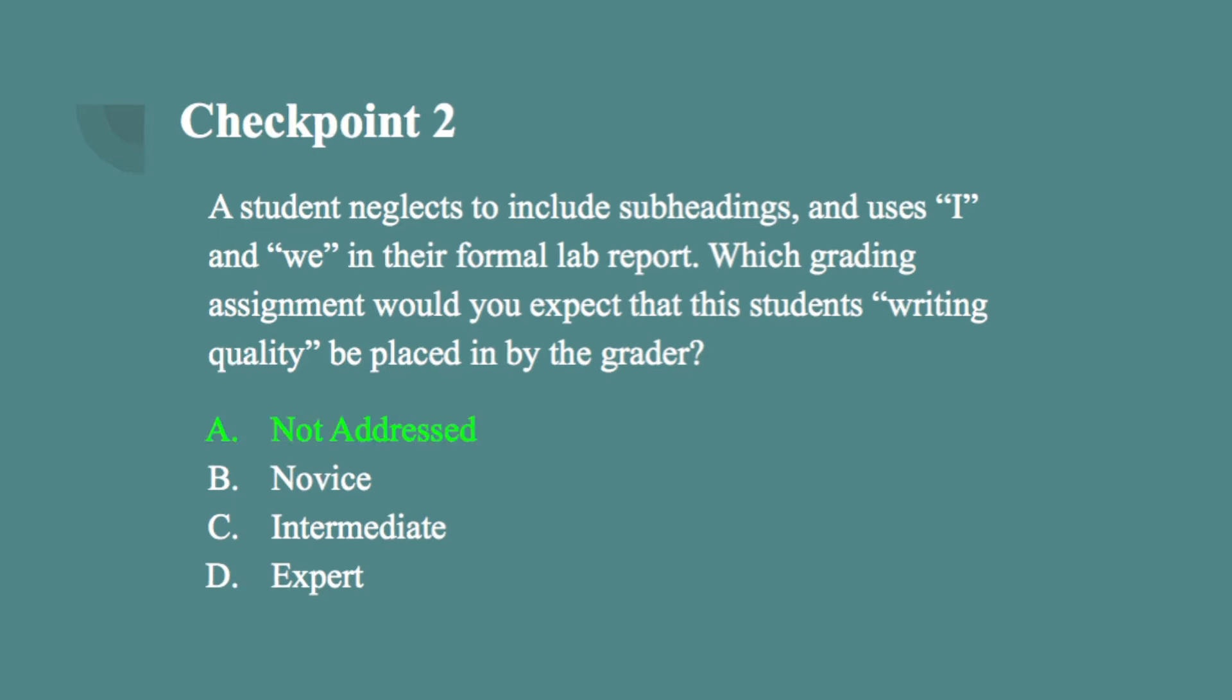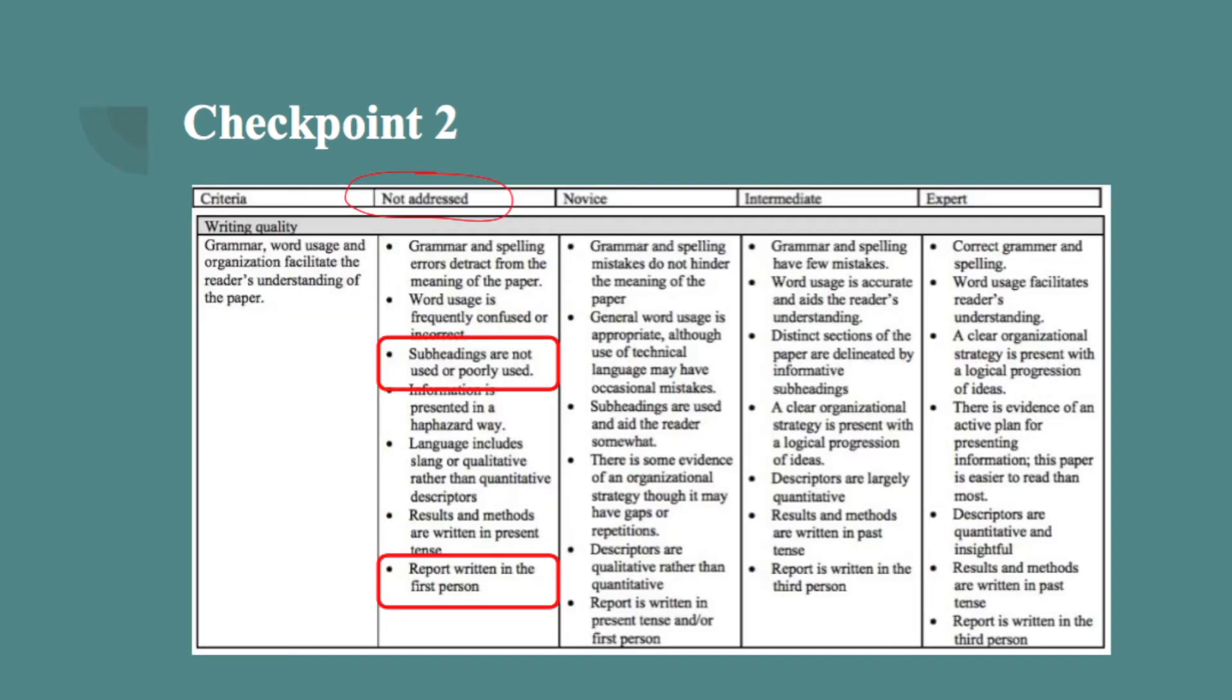The correct choice is A, not addressed. As indicated by the grading rubric in category writing quality, a student that uses first person pronouns and does not use subheadings should be placed in the not addressed category, thereby converting to about zero to two points maximum for this category.